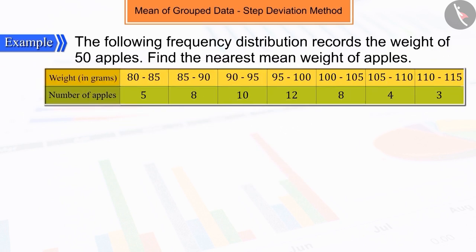The following frequency distribution records the weight of 50 apples. Can you find the nearest mean weight of these apples? Let's see.